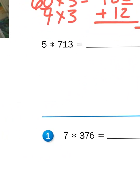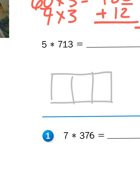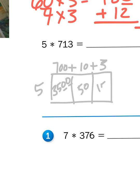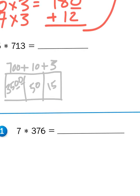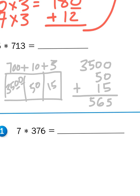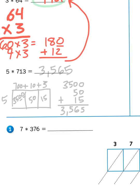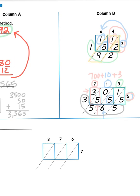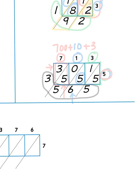Now if I were to break that down partition-rectangle style, it would look very similar. 713 is 700 plus 10 plus 3, and I multiply each by 5: 700 times 5 is 3,500; 5 times 10 is 50; and 5 times 3 is 15. Once I have those products, I line them up and add: 3,500 plus 50 plus 15 gives me 3,565. Lattice multiplication just takes all the computations you'd do in partitioning rectangles or partial products and lines up the digits within the place values — it does not incorporate the zeros, but you have to remember the zeros are involved.